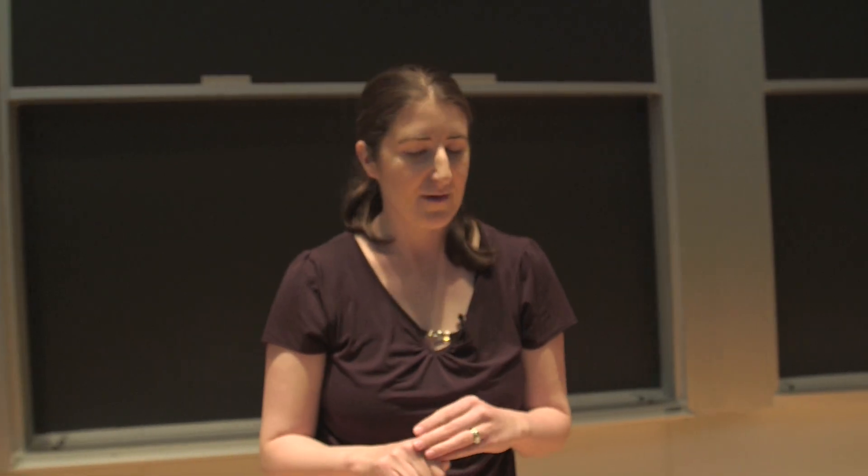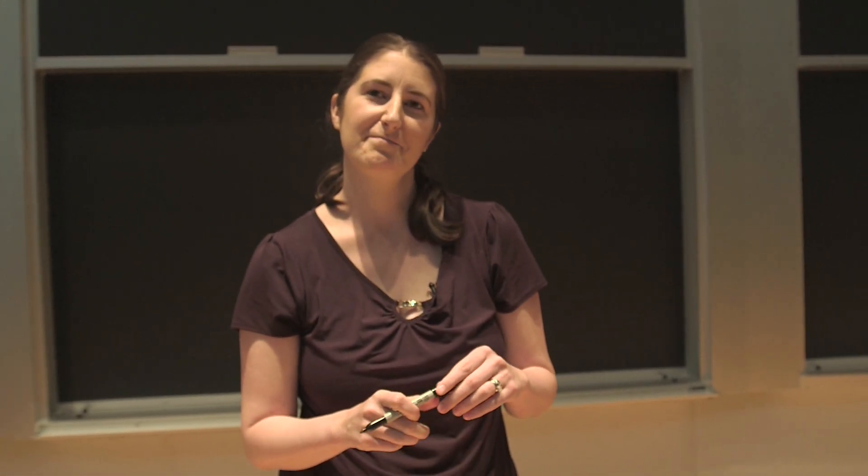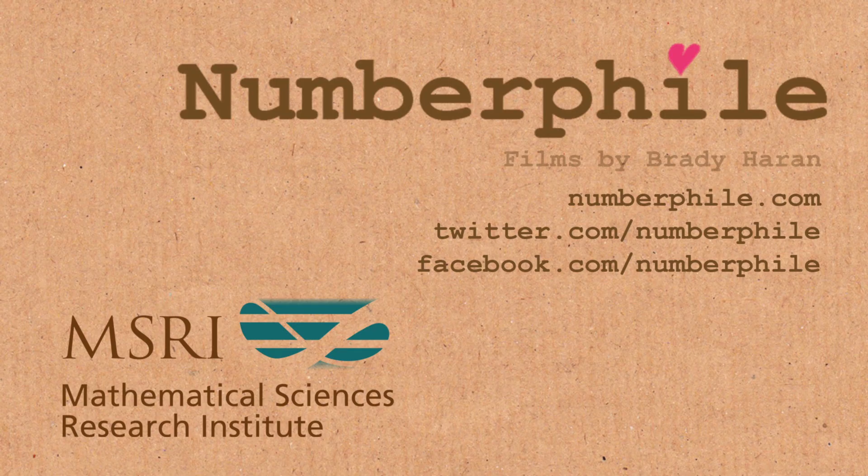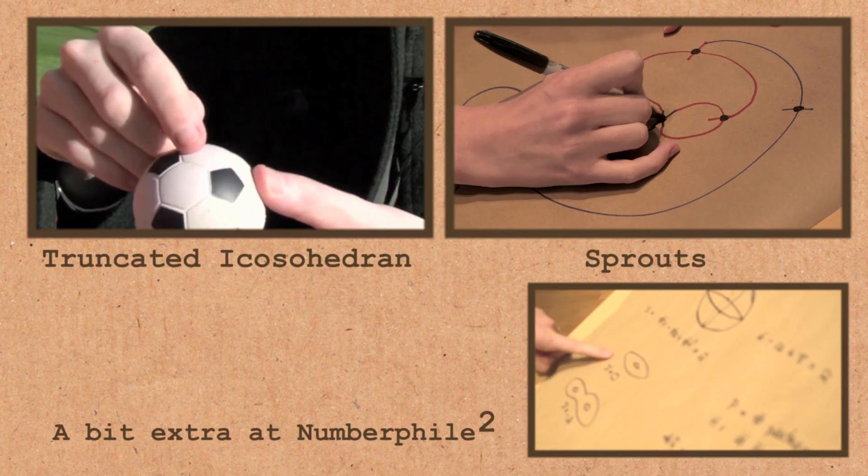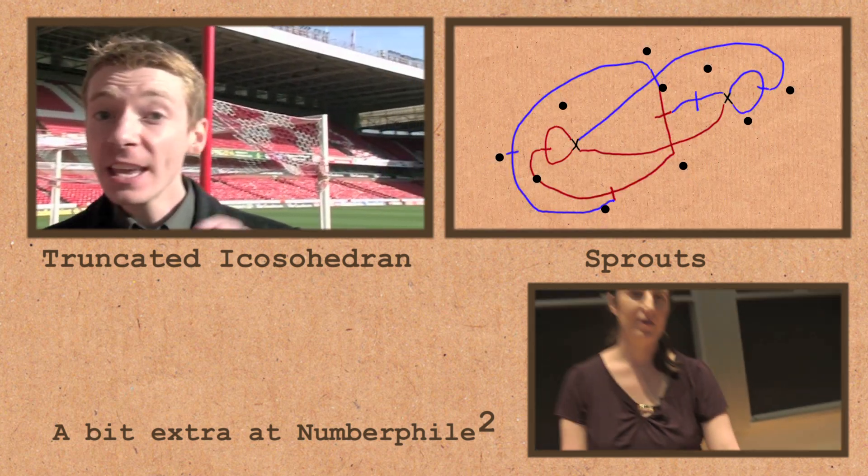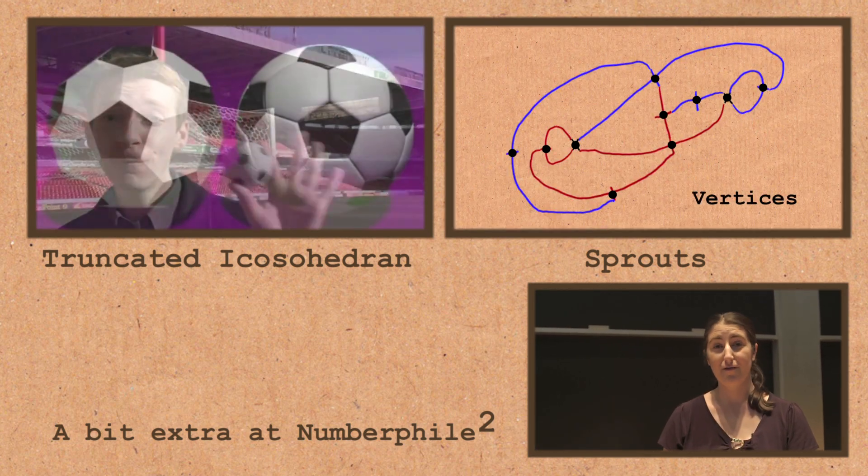So we just used the Euler characteristic to show that a standard soccer ball tiling has to have 12 pentagons and 20 hexagons. It would have been quicker just to count them, wouldn't it? Yeah, that's true. But we've shown that it has to be true. They are in black and 20 hexagon faces. There they are in white, and they fit together. And this is your traditional football.